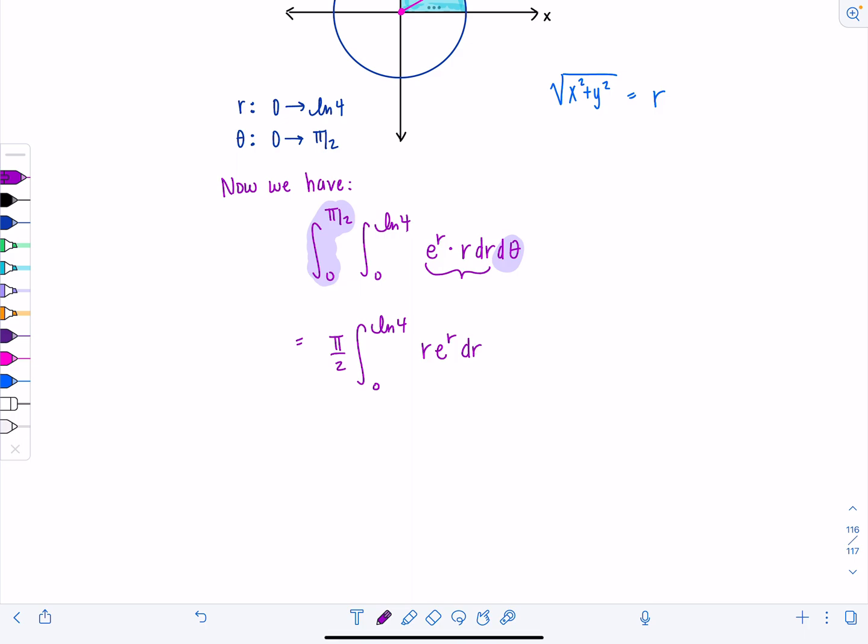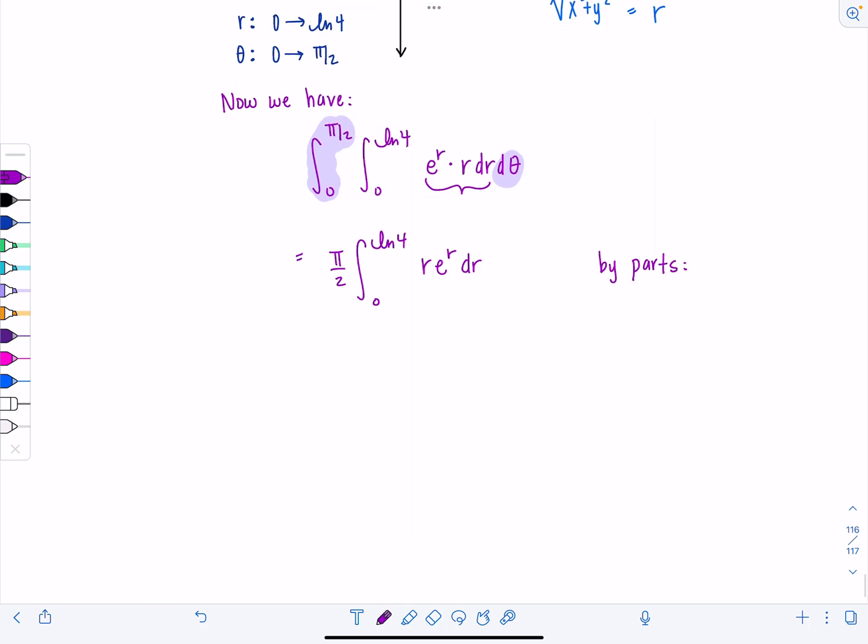And then now you have this sweet little integral that you probably could have done back in the start of your calc 2 career. This we're going to do by parts. See how crucial it is to remember all your integration techniques from calc 1. U will be r, and then dv is e to the r dr. V would be e to the r, and then du is dr.